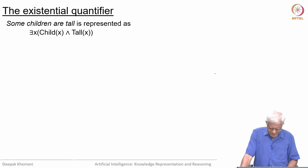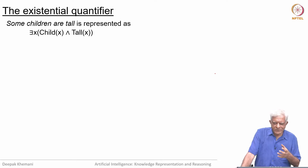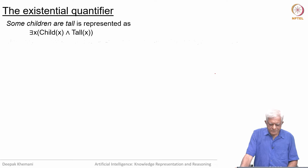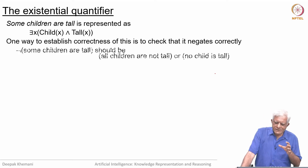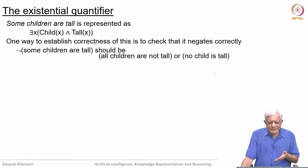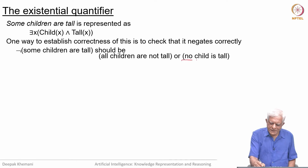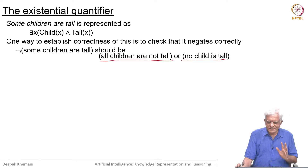Is that correct? One way to verify your representations is to check that the negation of what you are saying is obtained by negating your representation. One way to establish correctness is to check that it negates correctly. If you want to negate that some children are tall, then what you should expect is that all children are not tall, because if some children are tall and that is not true, that means no child is tall — either no child is tall or all children are not tall, which is the same thing assuming that not-tall is the opposite of tall.